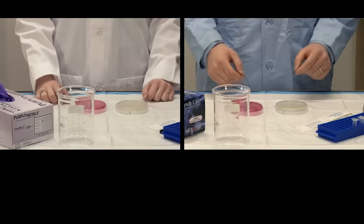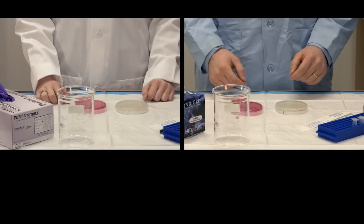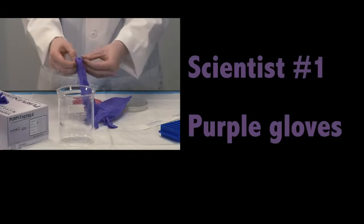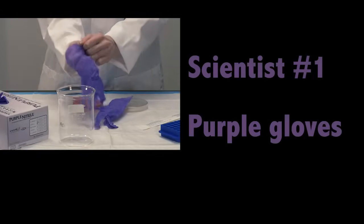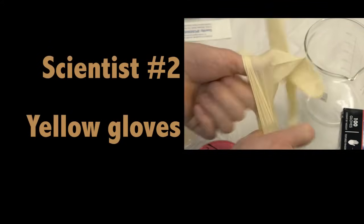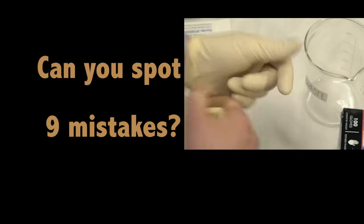Here, we have two scientists demonstrating the Kirby Bauer antibiotic sensitivity assay. Scientist number one, who's wearing purple gloves, will perform the assay flawlessly. Scientist number two, who's wearing yellow gloves, will make nine mistakes. Let's see if you can spot them.